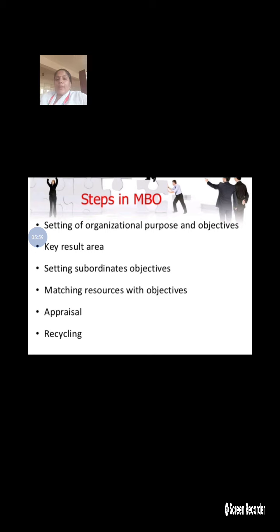What are the steps in MBO? The first step is setting organizational purpose and objectives. We have to formulate our organizational purpose and objectives and define the key result areas — the main areas to focus on to attain our target quickly. Then we set subordinate objectives, assigning work to each individual.